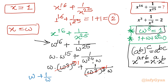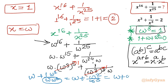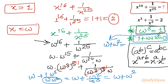Now I manipulate 1/ω by multiplying numerator and denominator by ω²: the denominator becomes ω³ = 1, so 1/ω = ω²/ω³ = ω². Therefore the expression becomes ω + ω². Using the second property of ω: ω + ω² = −1. So the answer for x = ω is −1.